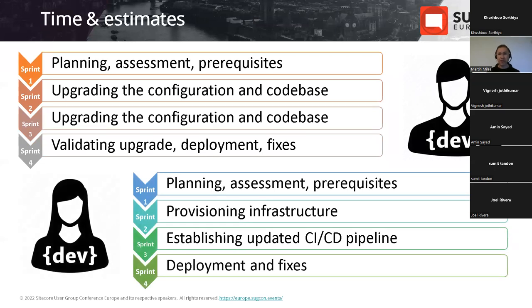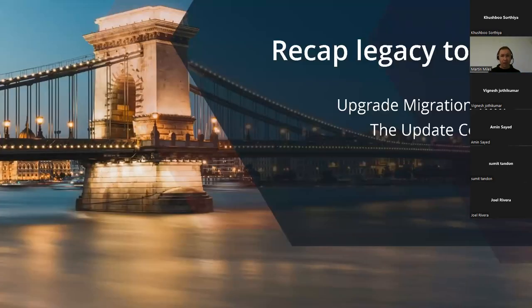Every solution and every team is unique, so estimates must consider all factors along with previous relevant experience of your team members. This diagram shows an optimistic view of a team of two experienced Sitecore professionals performing an upgrade in four typical sprints. One is primarily focused on upgrading the code base while the other focuses on DevOps things. This is not a formal guidance — it's just a high-level view of team activity through sprints.